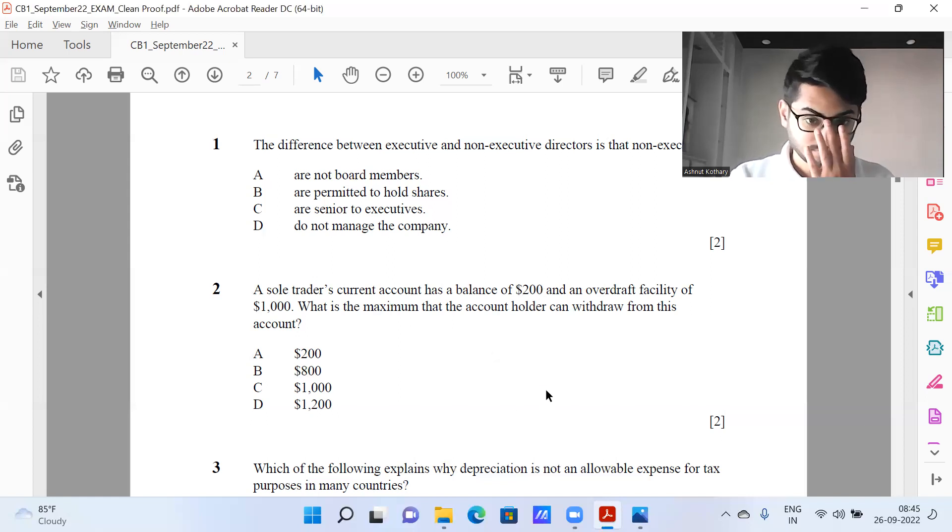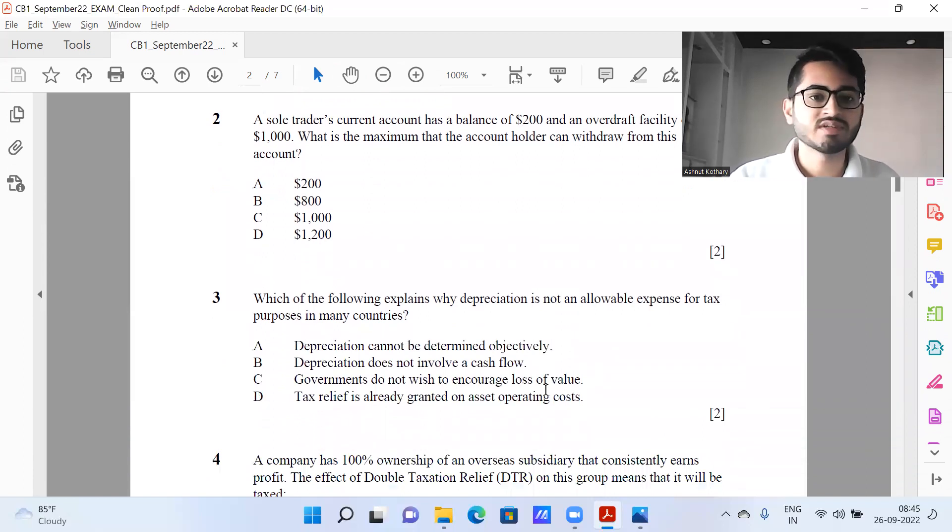Question number three, which of the following explains why depreciation is not an allowable expense for tax purposes in many countries. So this was one of the questions which I'll say was a tricky one. Option A looks completely good - nothing wrong with it. I mean, that is a major deficiency of depreciation that it cannot be determined objectively. You can use straight line method, reducing balance method, any sort of other method. Obviously different equipments, different things will be undergoing depreciation at a different pace. So at least in my understanding, the calculation of it is not very objective. It's extremely subjective.